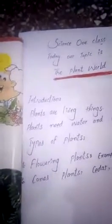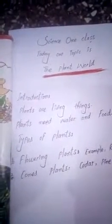We have learned that plants are living things. Plants have two things: water and food. Food is in the form of light.